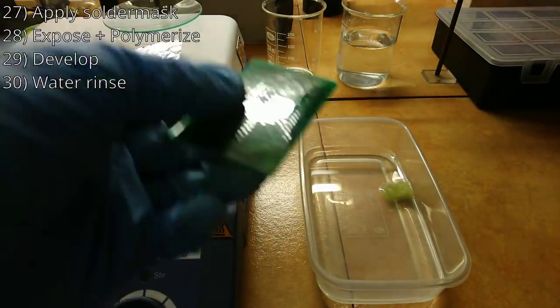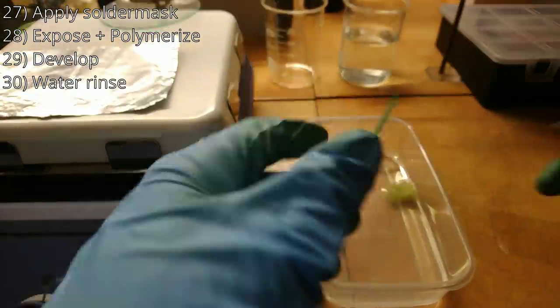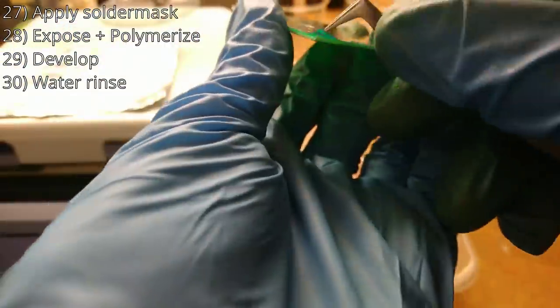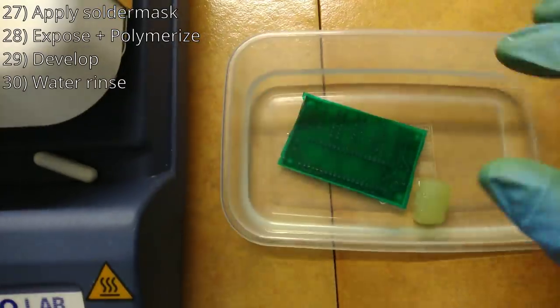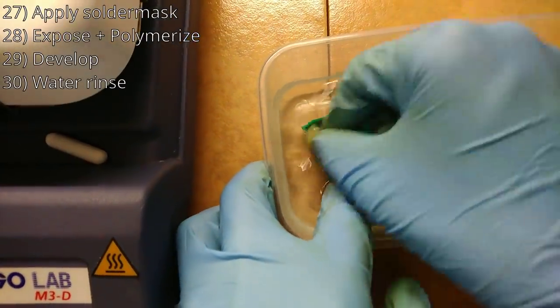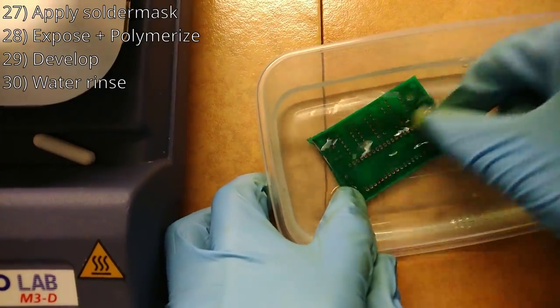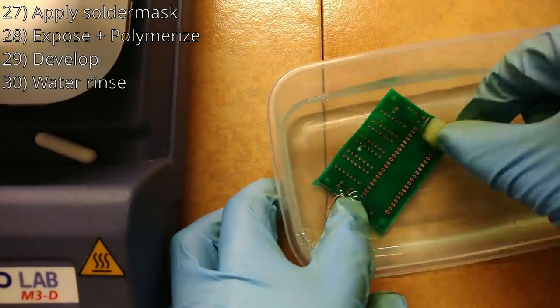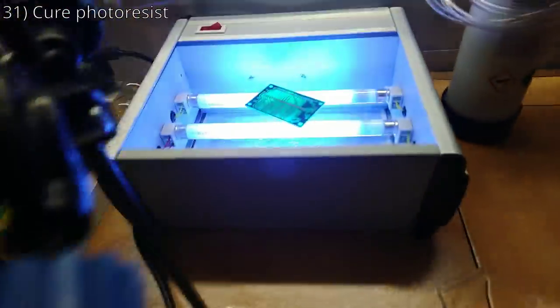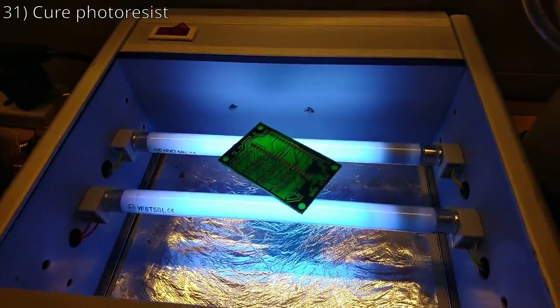Steps 27 to 30 are the same as 17 to 20, only the solder mask is applied instead of the photoresist. The solder mask material I use is a negative one and it is very similar to the negative photoresist, only the color differs. I didn't film steps 27 to 29, but I have the video of step 30, allowing to see the removal of the gelled solder mask, revealing the copper pads. Step 31 is the final step and consists in UV curing the solder mask for 30 minutes per side to achieve perfect adhesion.